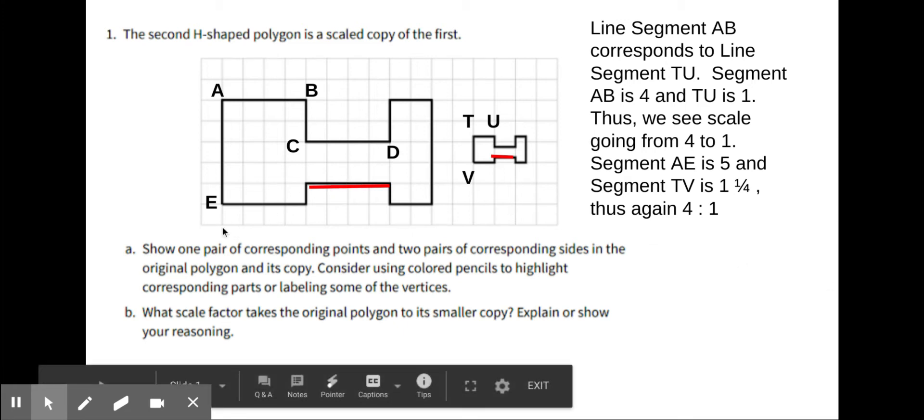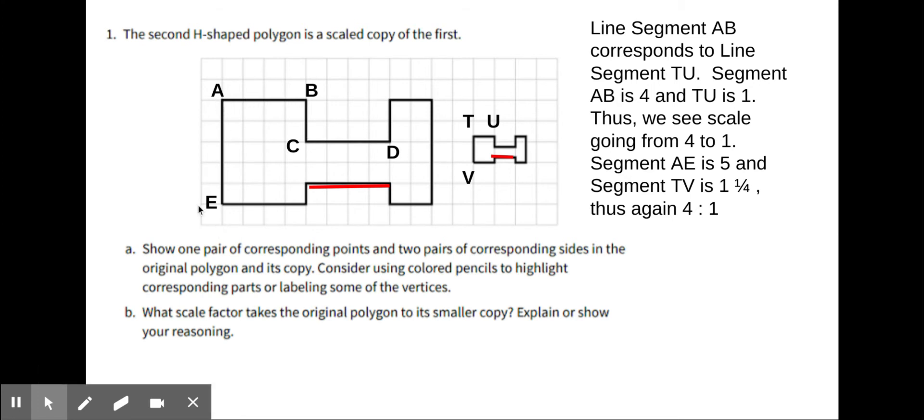So I put some labels on here and I also put some highlighting. I labeled points A, B, C, D, E, and I got points T, U, and V. Doing it with Google Slides is kind of hard adding extra letters in there.